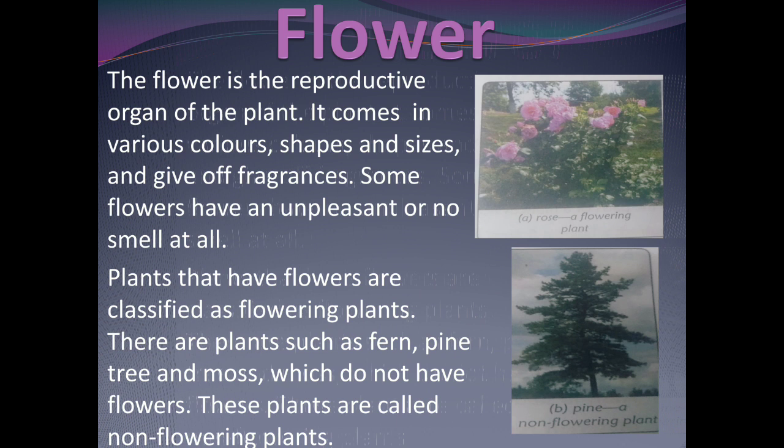There are two types of plants. One is flowering plants, and the other is non-flowering plants. Flowering plants are plants that grow flowers, like a rose. Non-flowering plants are plants on which flowers cannot grow, like pine and moss. This is why they are called non-flowering plants.